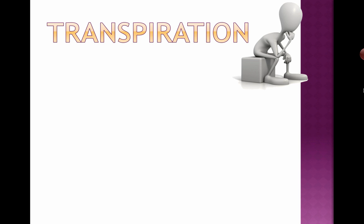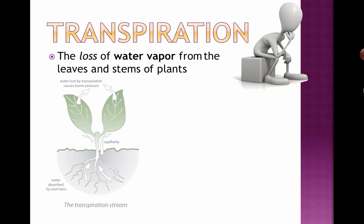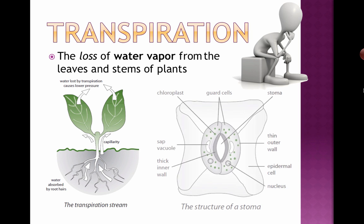Let's look at transpiration. Transpiration is a very important property demonstrated by plants, and we're talking about water primarily. We're talking about the loss of water vapor from the leaves and stems of plants, and there's something called transpiration pull, which we're going to go through.